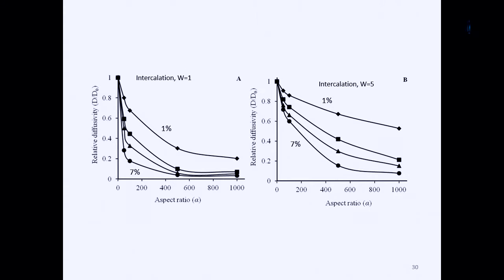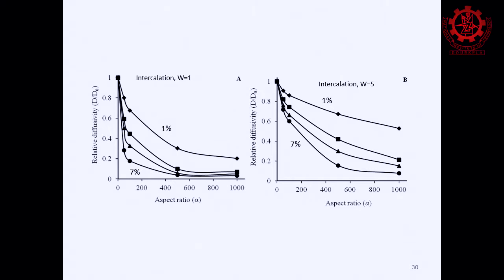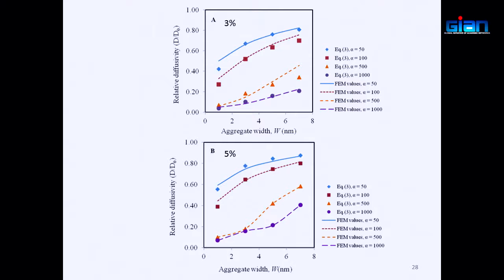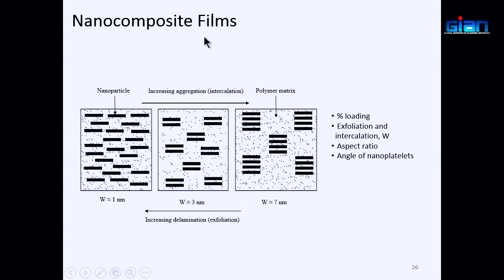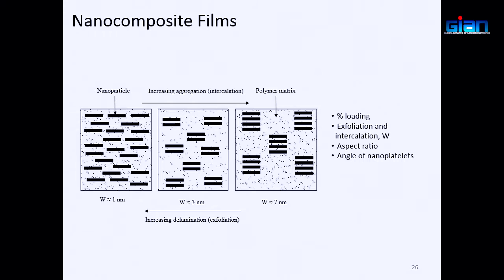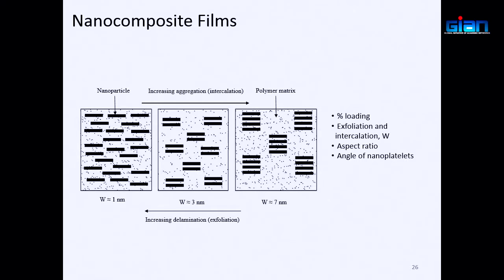A student noted that controlling the alignment of nanoplatelets in a barrier film seems difficult. The lecturer confirmed: the analysis shown is from computer simulation. In practice, it is quite hard. Researchers have been trying to modify the surface chemistry of these nanoplatelets to introduce repulsive forces so they do not aggregate.